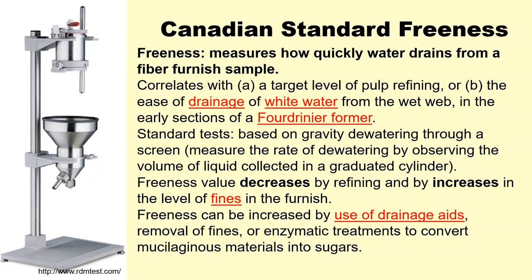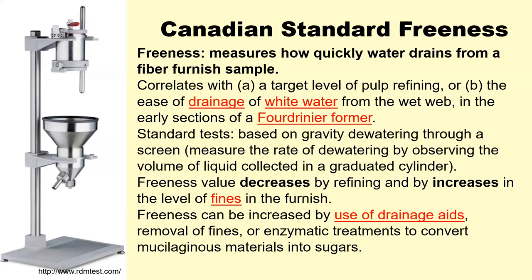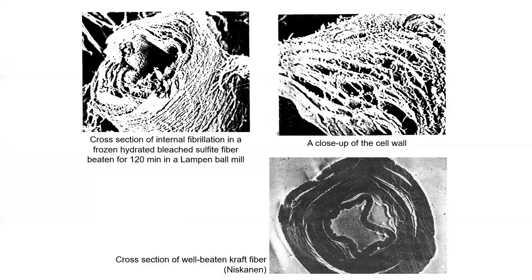The CSF is a way to measure drainage. In short, we take a fiber suspension and let it filter through a screen. We measure how much water drains through that network of fibers deposited on the screen. How fast the water drains tells us how well refined the pulp was. A fiber that is highly fibrillated will drain water more slowly — because we have a lot of surface area, a lot of fibrillation, surface fibrils and cellulose exposed to water. It will retain water and therefore water will go through the screen slower. Less refined fiber will drain water much faster.